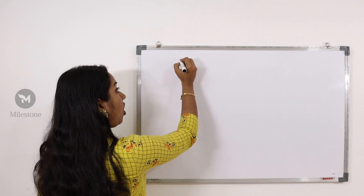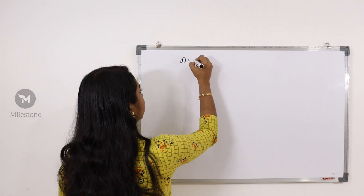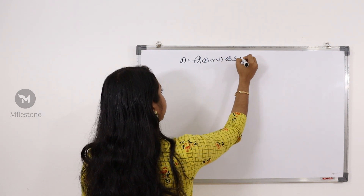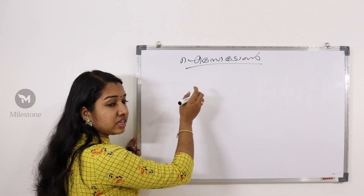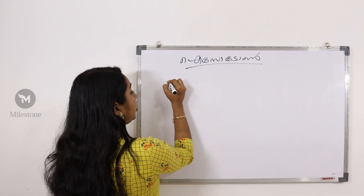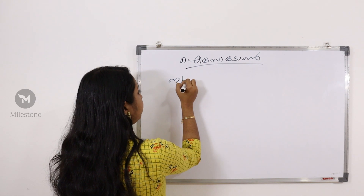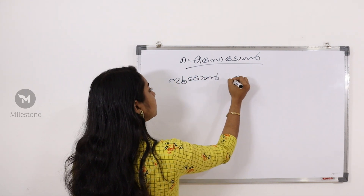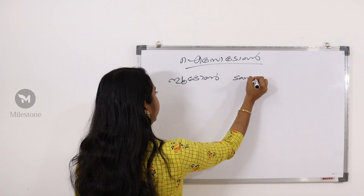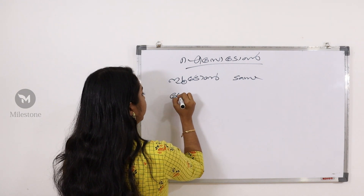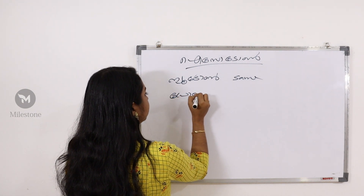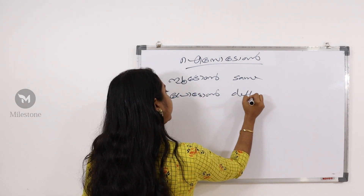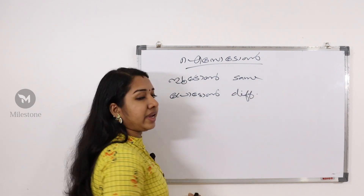Isotone: the neutron number is the same, the proton number is different.